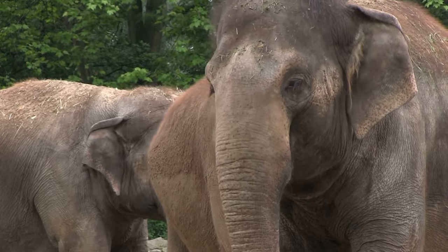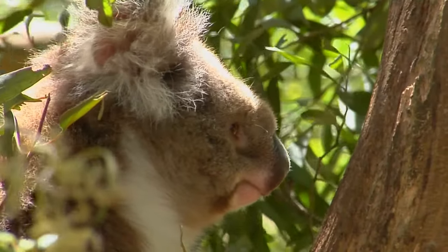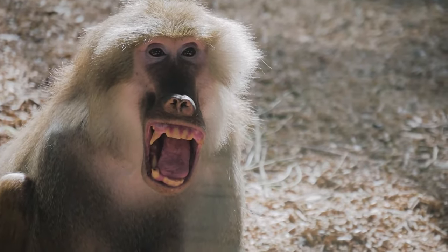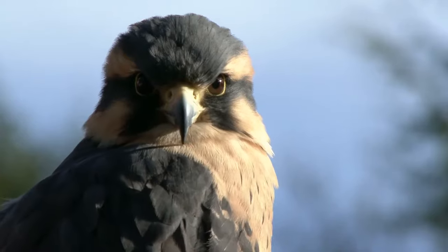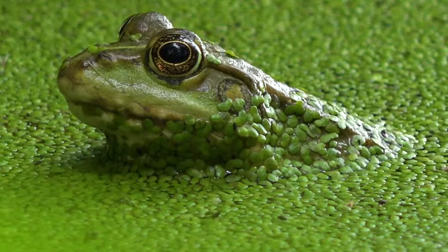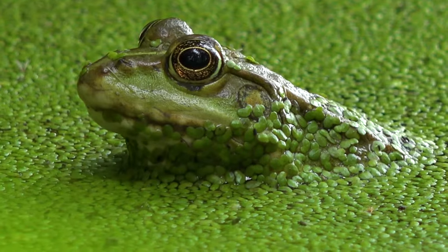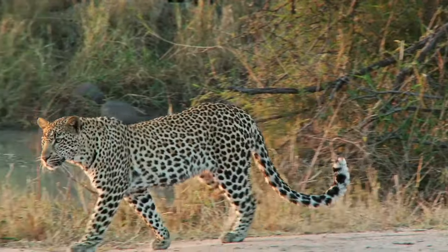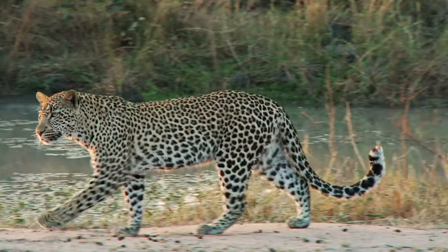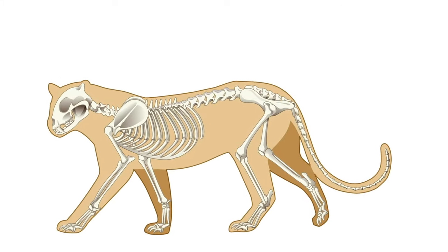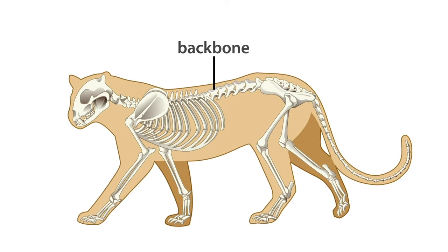Many of the animals we are familiar with are vertebrates. These include mammals, birds, reptiles, amphibians and fish. They are classified together due to the presence of a backbone and an internal skeleton of bone, which provides their bodies with support and protection.